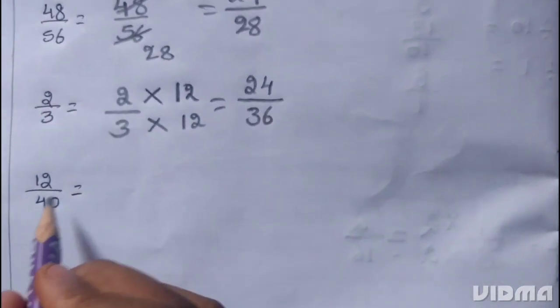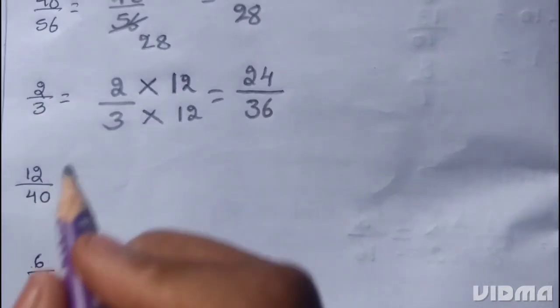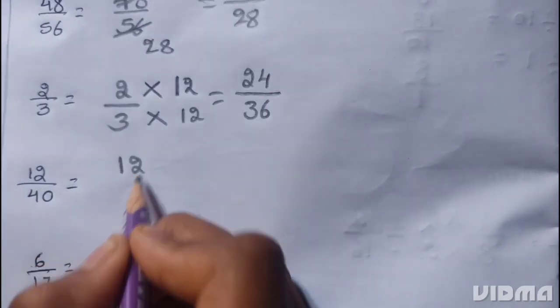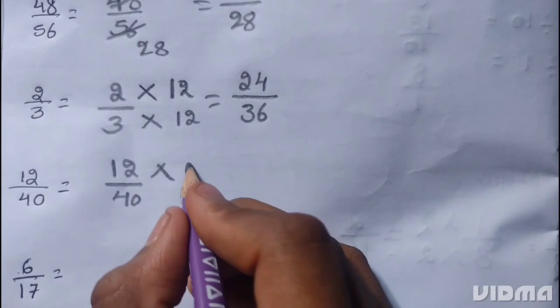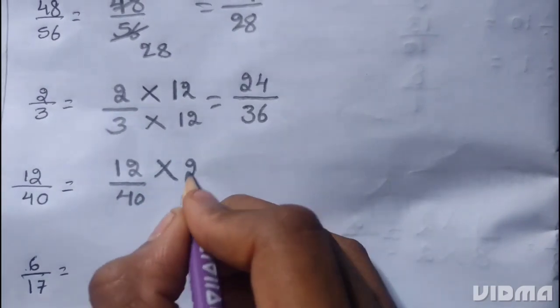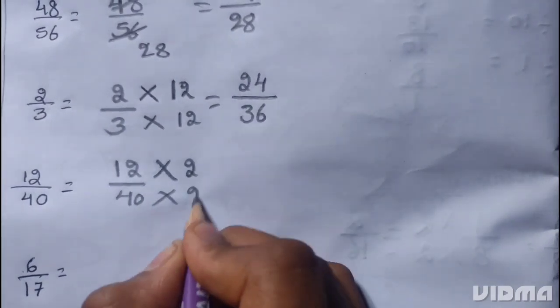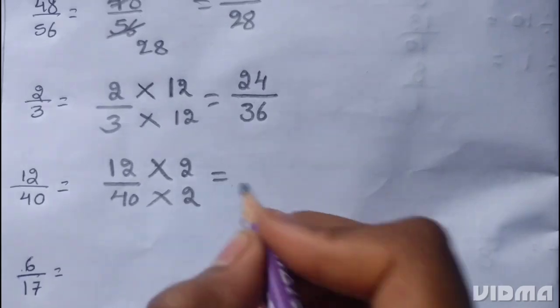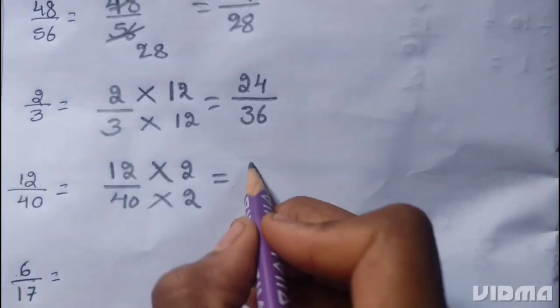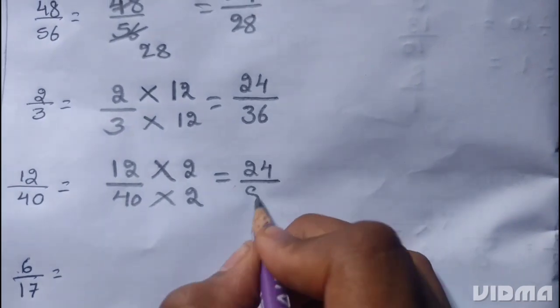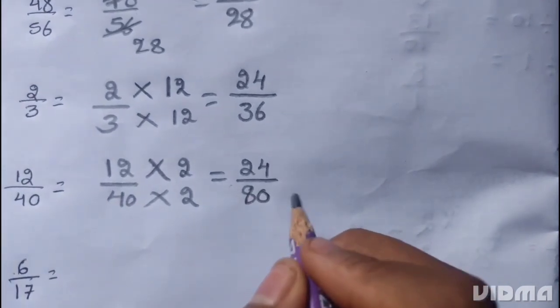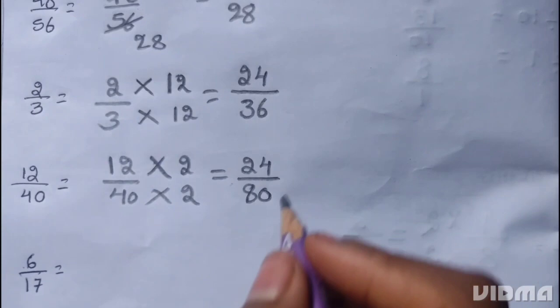12 by 40. 12 multiply 2, 40 multiply 2. 12 2s are 24, 40 2s are 80. 24 is the numerator, 80 is the denominator.